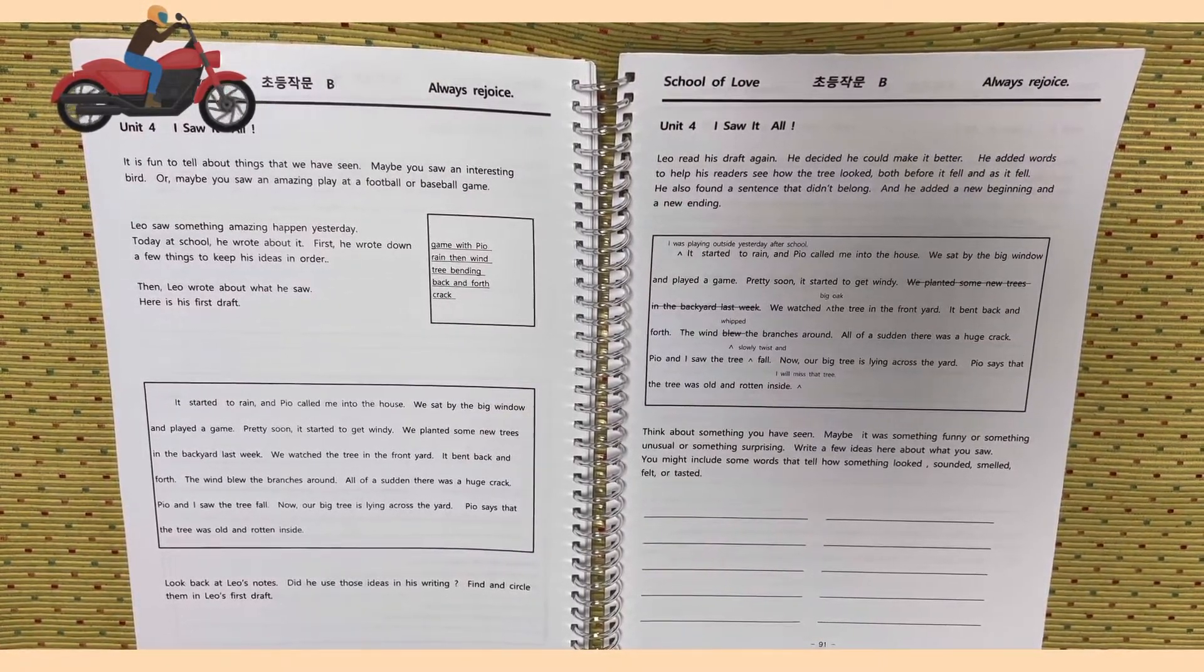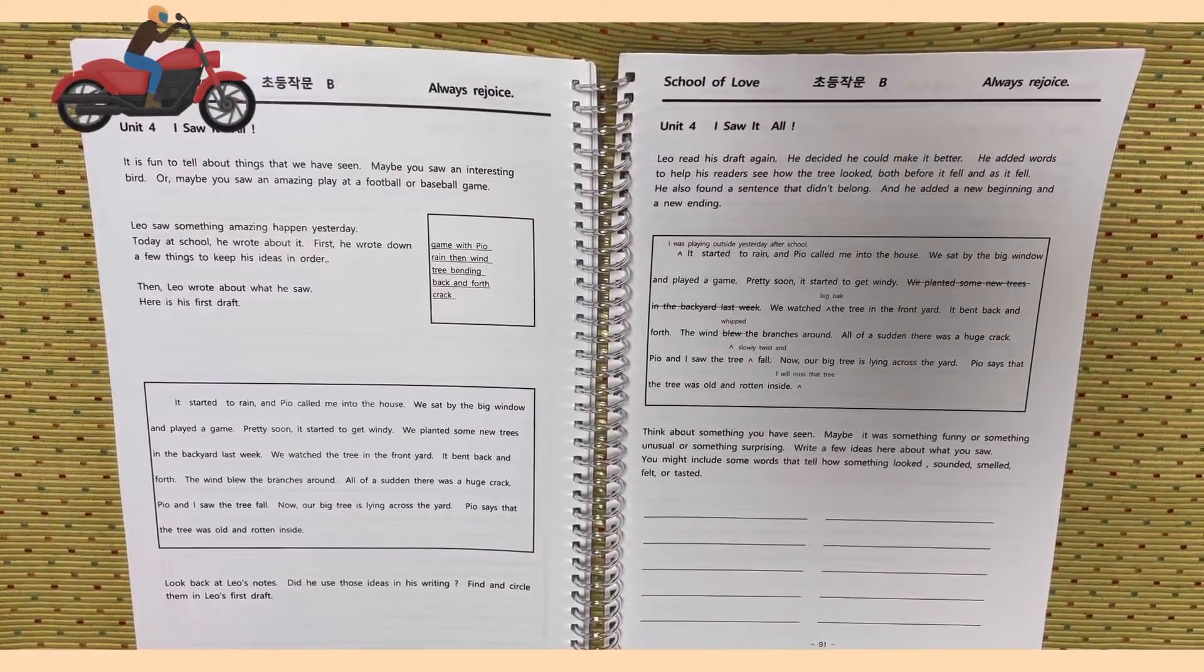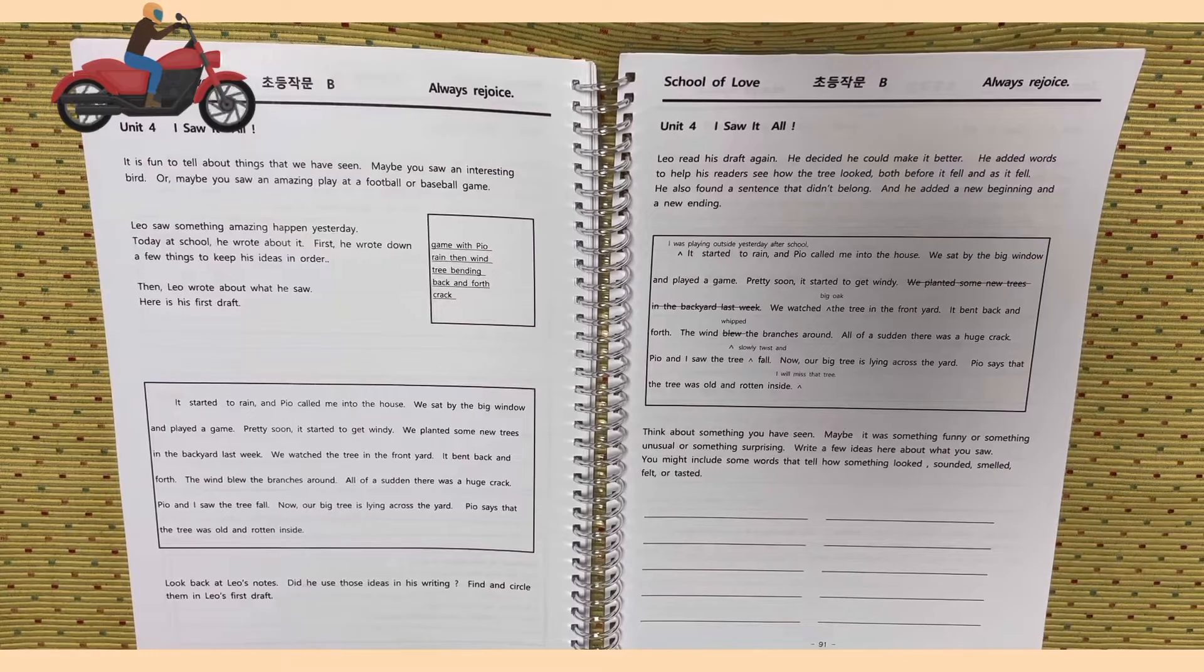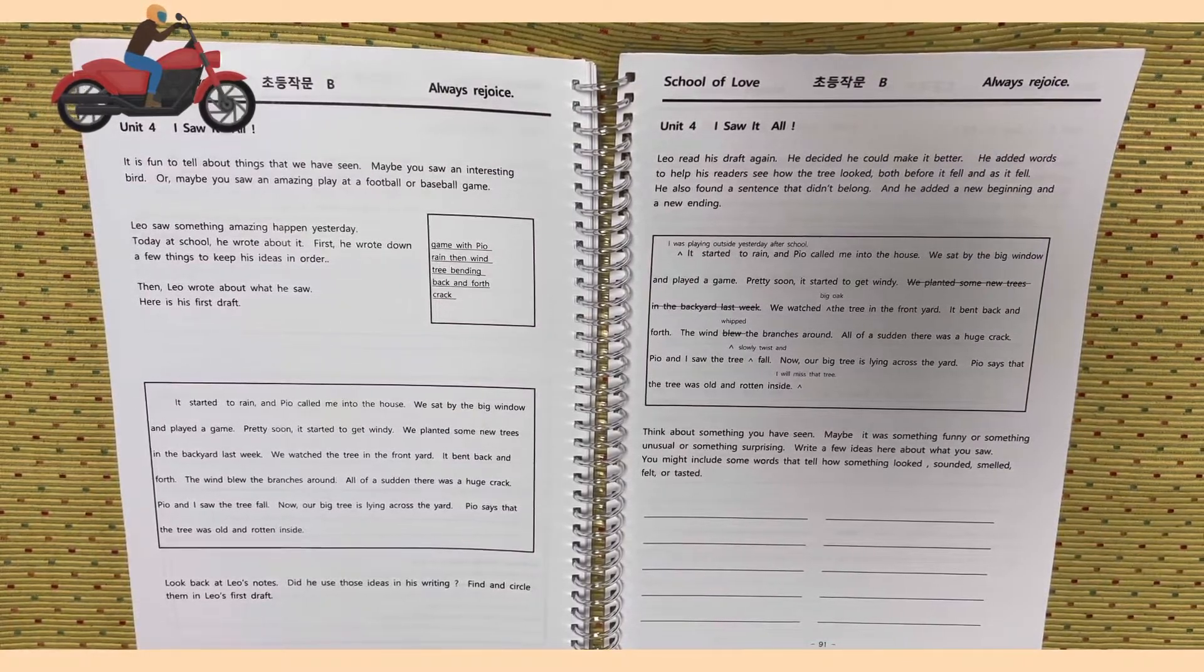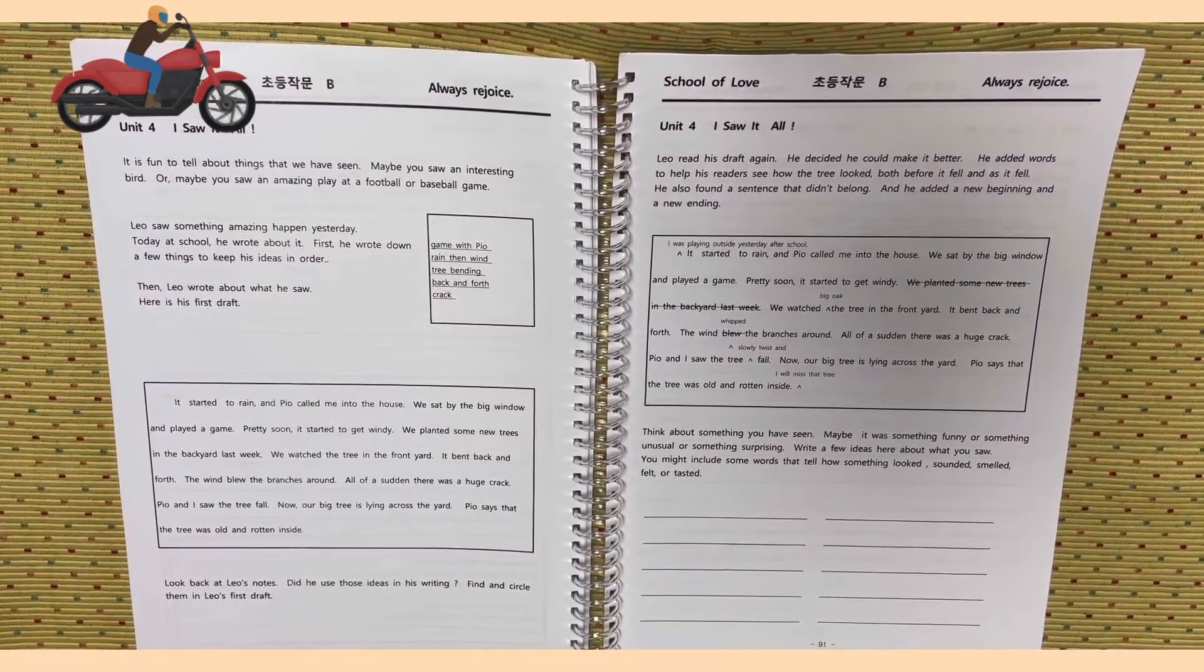The wind blew the branches around. All of a sudden, there was a huge crack. Pio and I saw the tree fall. Now, our big tree is lying across the yard. Pio said that the tree was old and rotten inside.